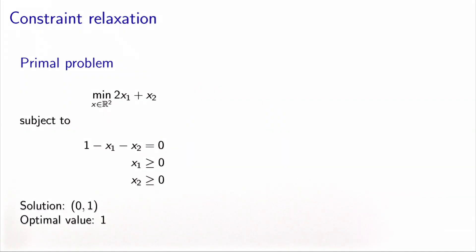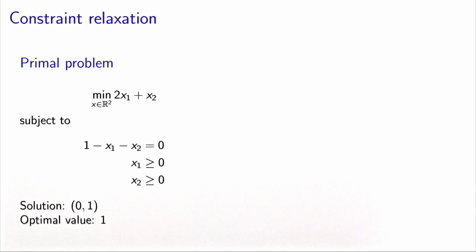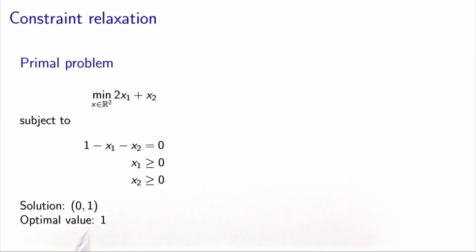Let's now see what these concepts mean in a mathematical model. We have an optimization problem with two variables x1 and x2, subject to one equality constraint, with both variables non-negative. It's easy to check that the optimal solution is x1=0 and x2=1, giving an optimal value of one.